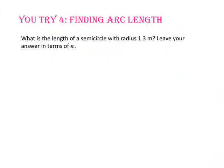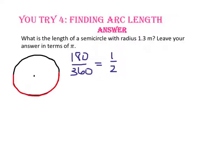Pause the video and do U-try number 4. What is the length of a semicircle with radius 1.3 meters? Leave your answer in terms of pi. Let's start by drawing the picture. We know a semicircle is half the circle, or 180 out of 360 degrees. We also know the radius is 1.3 meters.